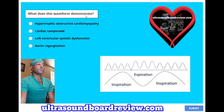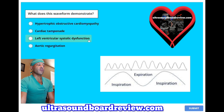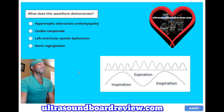What does this waveform demonstrate? A, hypertrophic obstructive cardiomyopathy; B, cardiac tamponade; C, left ventricular systolic dysfunction; or D, aortic regurgitation? The answer is B, cardiac tamponade, and this waveform is pulsus paradoxus.